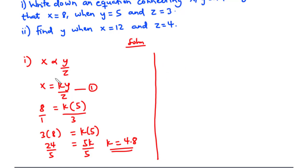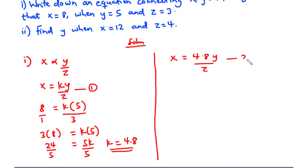Using this same equation with the value of k substituted, we have x equals 4.8 times y divided by z. Let's call this equation 2. This is the equation connecting x, y and z.